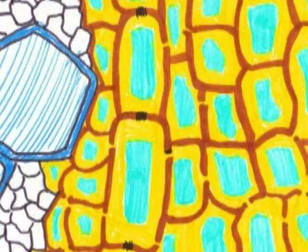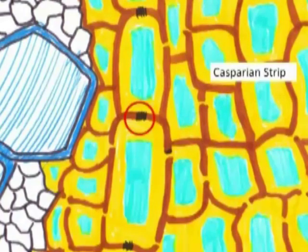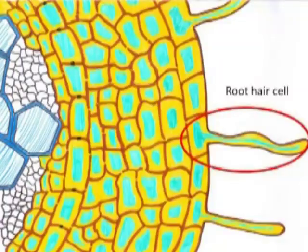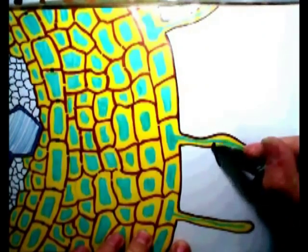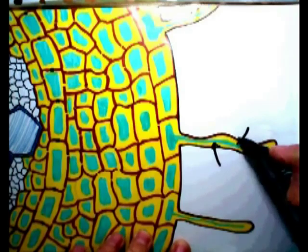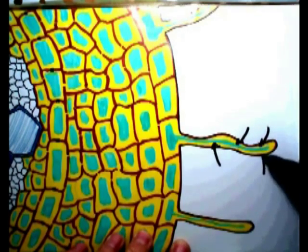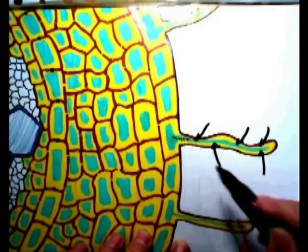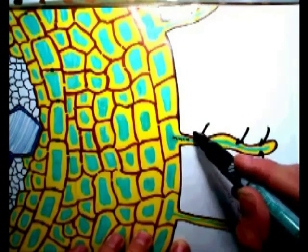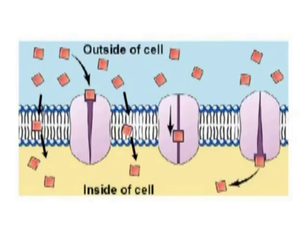If you look at the close-up of the root cells, there are certain Casparian strips present on the cell wall, which block water or work as a wax. As the water potential of the soil is zero, water moves from soil to the root hairs because the water potential of the root hair cell is negative.